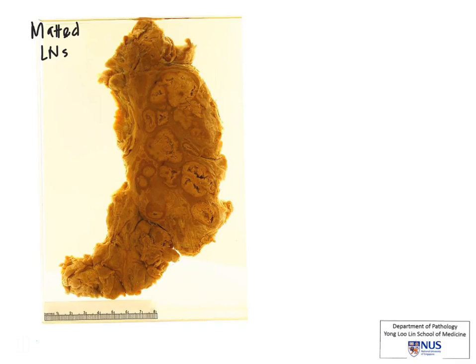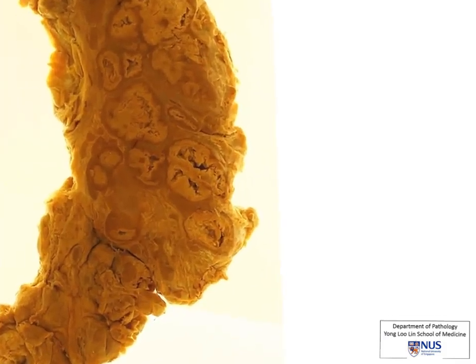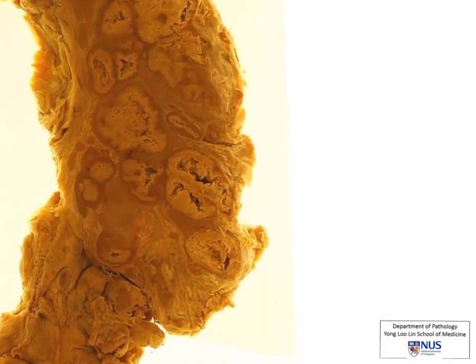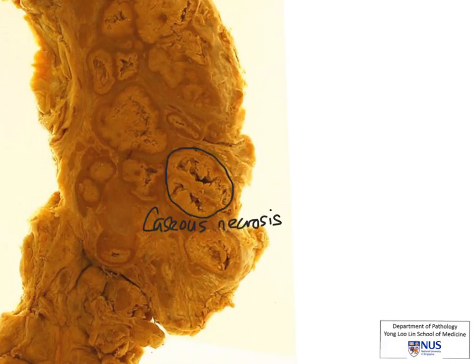Now let's take a closer look at the gross appearance. We can see that even within this nodal mass, there are some areas that show a different colour — here that I'm outlining, as well as here and here. They are paler, and there seem to be some areas of cavitation, showing that this area of tissue is very friable. This is the gross appearance of caseous necrosis, and this is one of the key features of tuberculous infection. Therefore, the diagnosis in this case is tuberculous lymphadenitis.